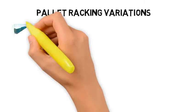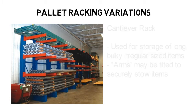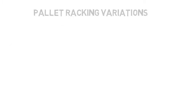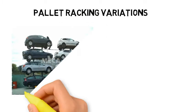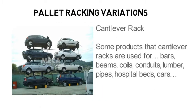Cantilever racks are used for storage of long, bulky, irregular-sized items. The arms, extending perpendicularly from uprights, may be tilted to securely store these items. Some products that cantilever racks are used for include metal bars, wooden beams, coils of cables, conduits, lumber, pipes, hospital beds, and even cars.